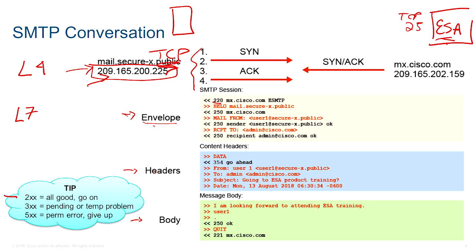With the envelope, we are simply introducing the two MTAs to each other. After the three-way handshake, the Cisco server sends back a 220, meaning 'service is ready.' A 200-level code means all is good, 300 means more information is needed, and 500 means an error. The sending MTA sends its hostname, and the receiving server replies with 250 — action okay and completed — meaning 'I hear you, I got your hostname, I agree with it.'